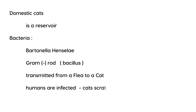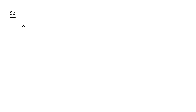Humans are infected either from a cat scratch, which is the most common way, or sometimes a cat bite, and most of the time it's children. The symptomatology of cat scratch disease usually occurs after about three to ten days after the bite or the scratch.